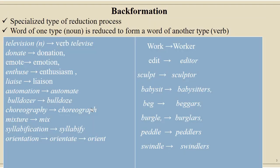Back formation is another type of reduction in the form of a word — a special kind of reduction. In back formation, a word of one type, usually a noun, is reduced to form a word of another type, which is a verb. So a noun is used as a verb in back formation. For example: television gives us televised, donate from donation, emote from emotion, syllabify from syllabification, and orient or orientate from orientation.